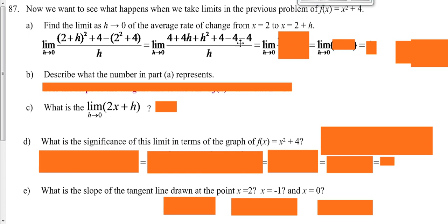Our 4s cancel out these 4s, so we're just left with 4h plus h squared over h. We can't plug in zero because we'd still get zero over zero, but we can take an h out of everything, and then we get this here.